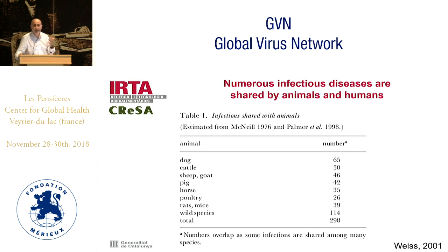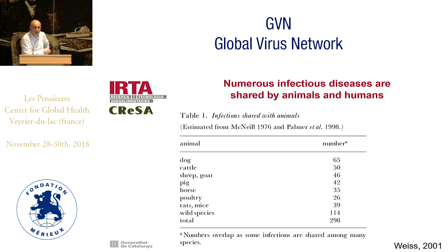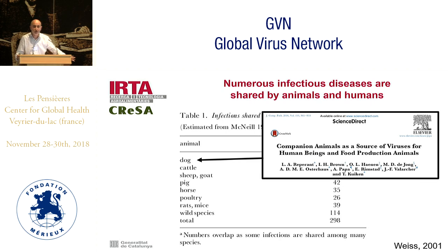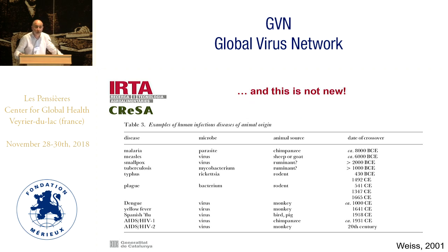The possibility of transmission of viruses between animals and humans is very well known. This is a relatively old table, coming from almost 20 years ago, but here you can see the number of infections that can be shared with animals. It is very clear that small animals such as dogs, as well as large production animals and especially wildlife species, harbor a significant number of viruses that can be shared with humans.